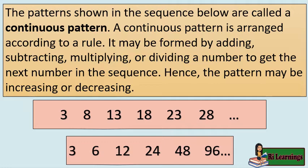The patterns shown in the sequence below are called a continuous pattern. A continuous pattern is arranged according to a rule. It may be formed by adding, subtracting, multiplying, or dividing a number to get the next number in the sequence. Hence, the pattern may be increasing or decreasing.